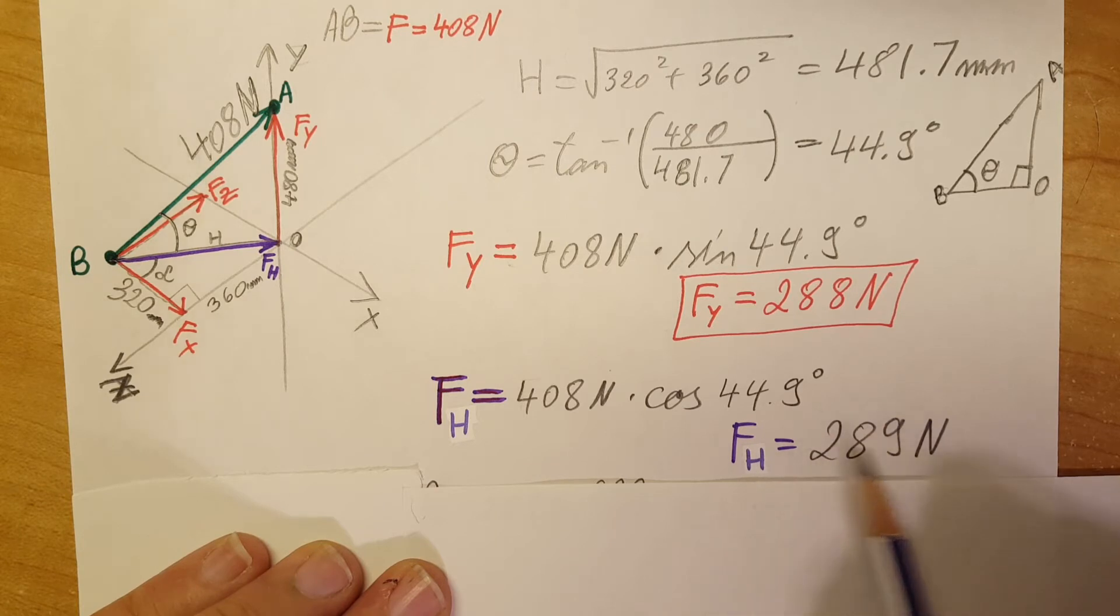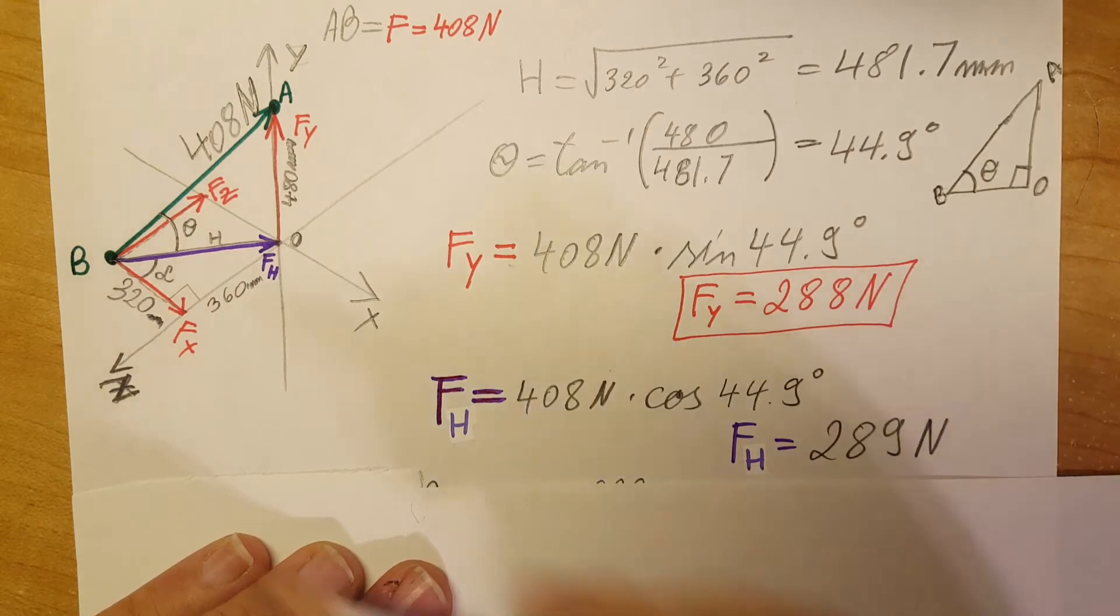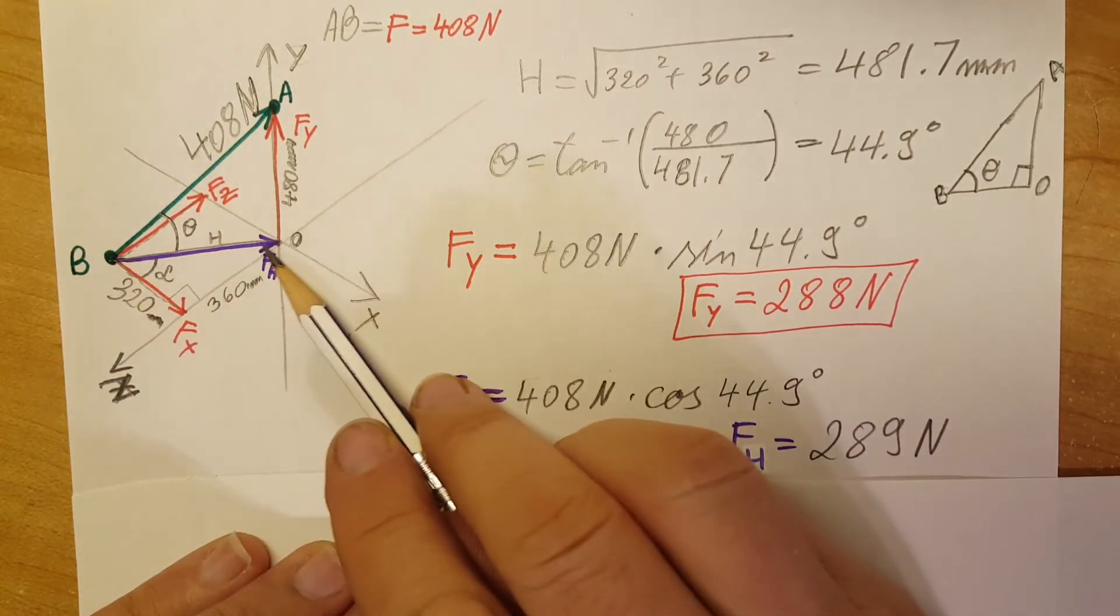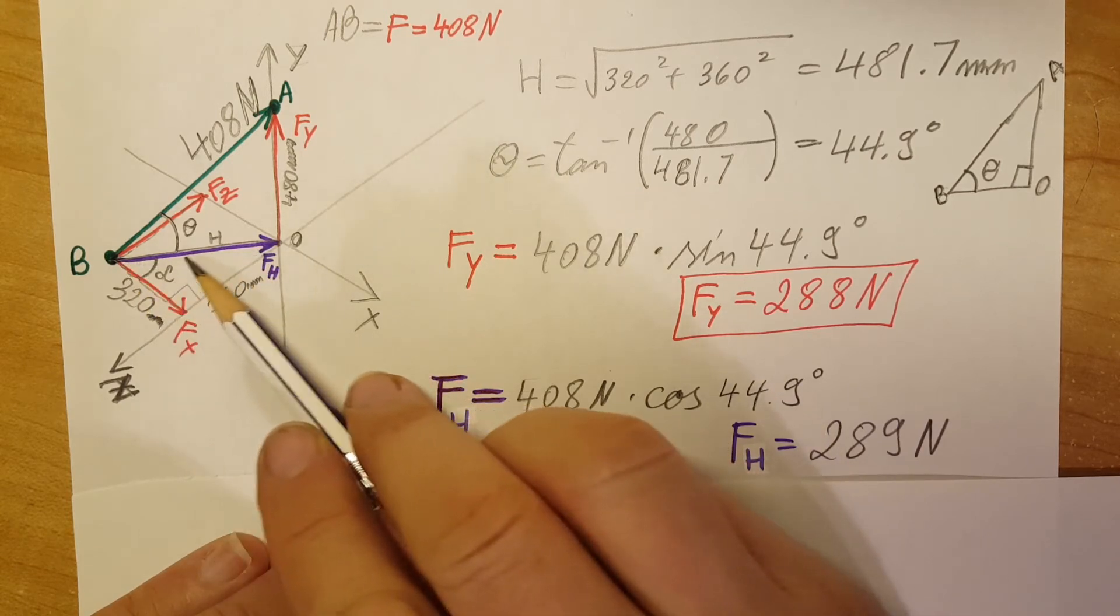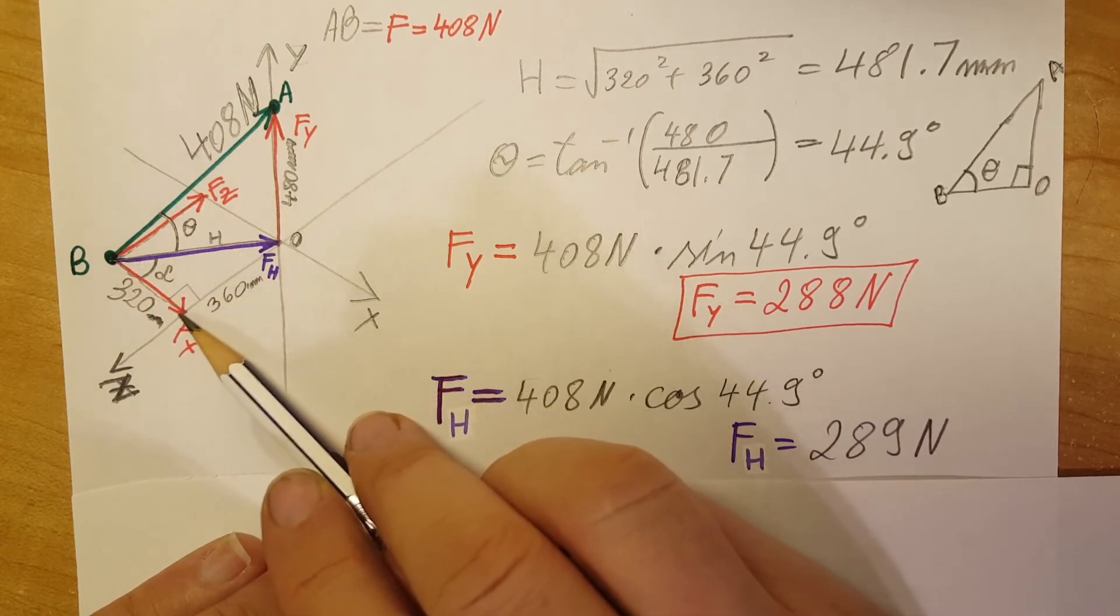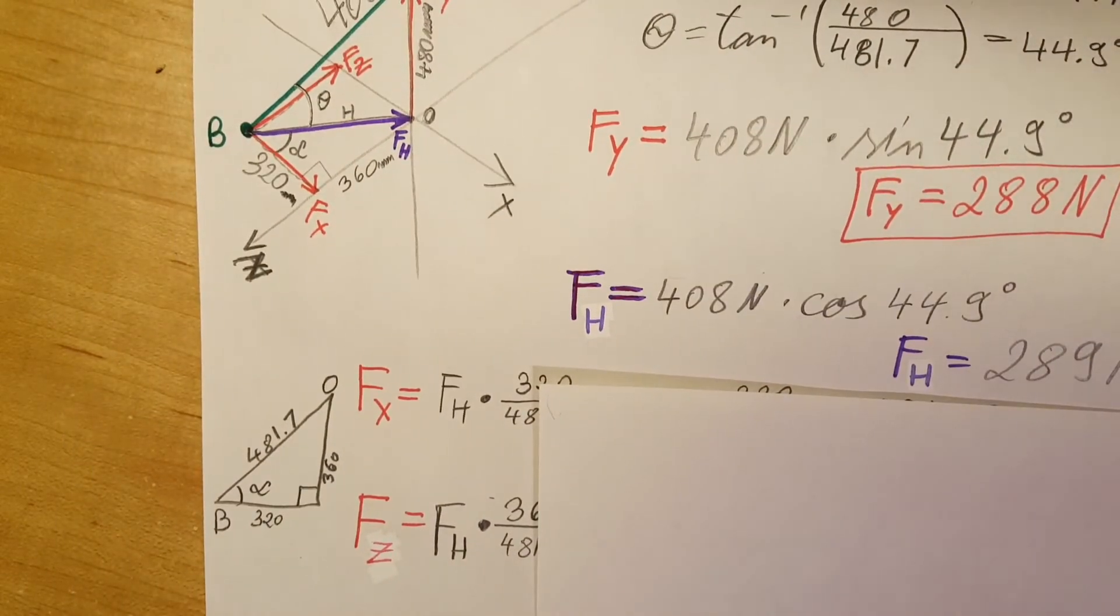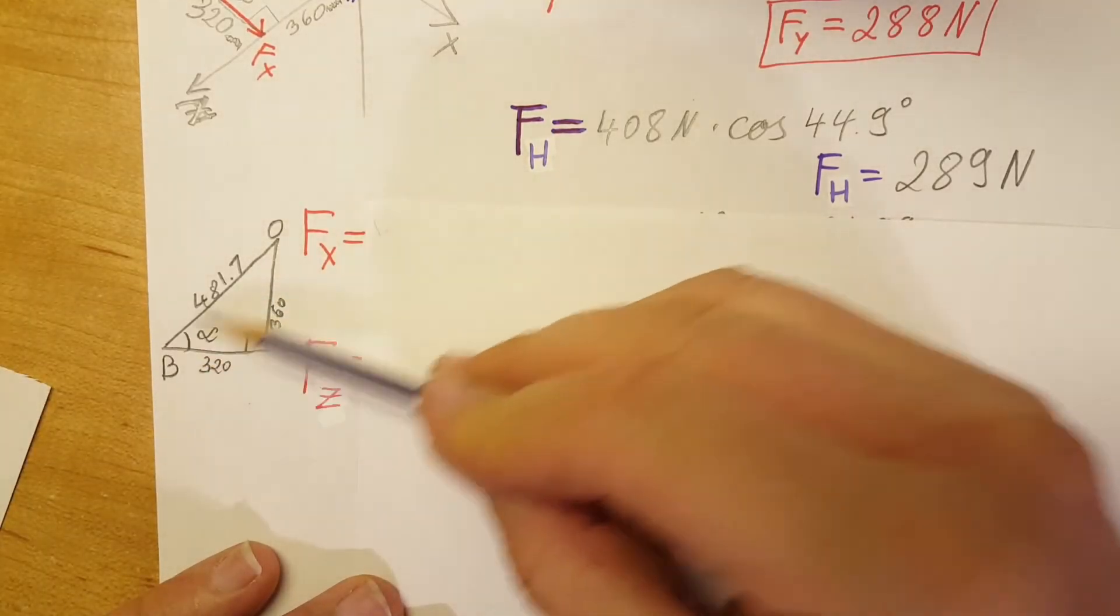With a calculator we get 289 newtons. Now we have this one, so we are able to utilize this triangle right here, which is B, O, and this corner right here. So this triangle, I'm going to go ahead and redraw it here so you can see it better.